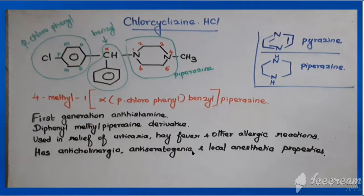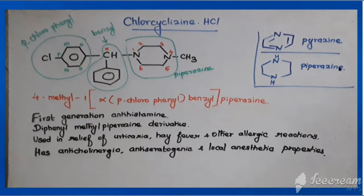Other than antihistaminic activity, chlorcyclizine also has anti-cholinergic, anti-serotonergic, and local anesthetic properties. The heterocyclic ring present in chlorcyclizine is piperazine — a saturated six-membered heterocyclic ring with two nitrogens at positions 1 and 4.